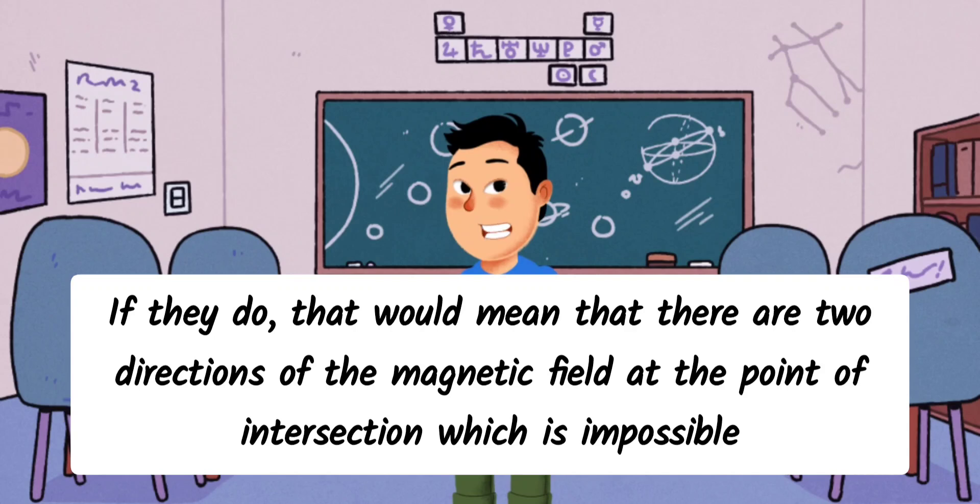Field lines never intersect with each other. If they do, that would mean that there are two directions of the magnetic field at the point of intersection, which is impossible.